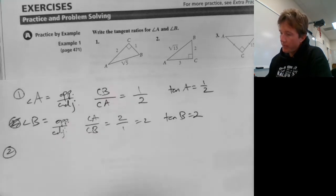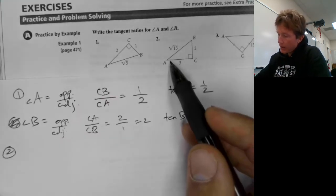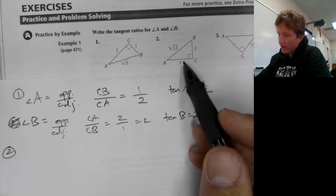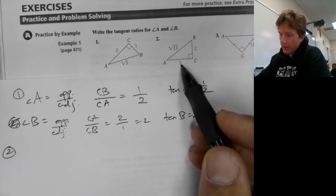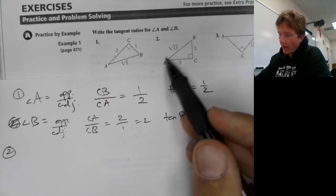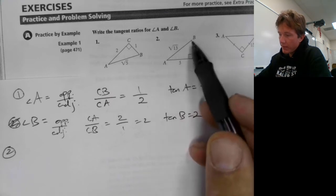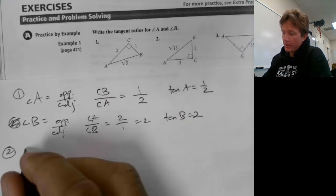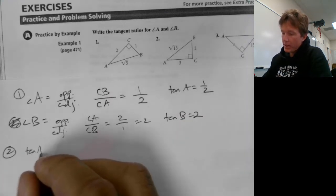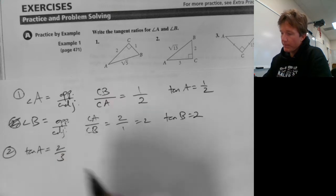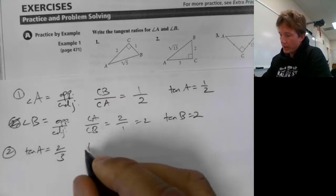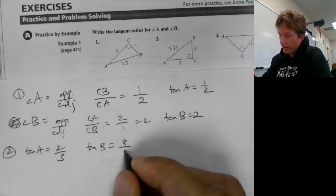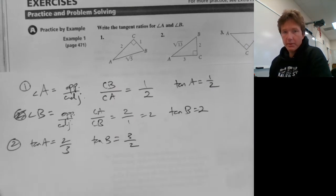Number two: angle A is down here. The opposite side is two. The adjacent side is three. Notice how AB is the hypotenuse, so we're not going to be using that. So tangent of A equals two over three. And then tangent of B equals three over two. Again, the reciprocals.